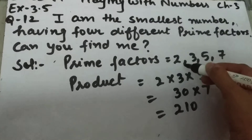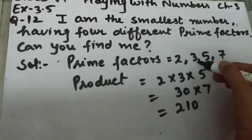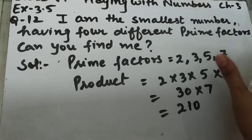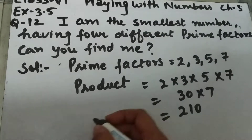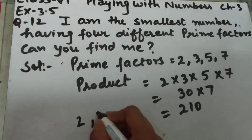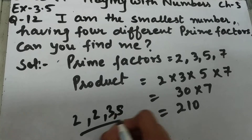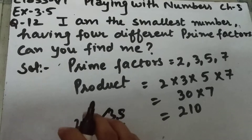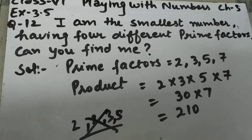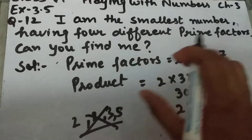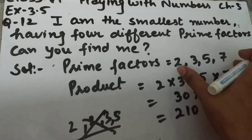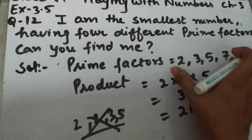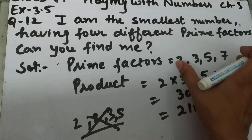Here I have taken all the prime factors different: 2, 3, 5, and 7. We cannot take something like 2, 2, 3, 5 — repetition is not allowed. Repetition of prime factors is not allowed here.